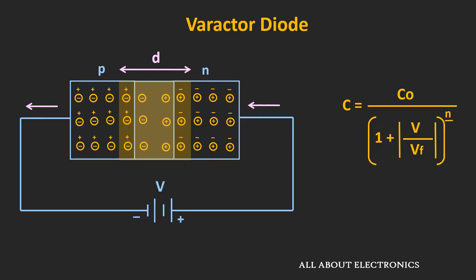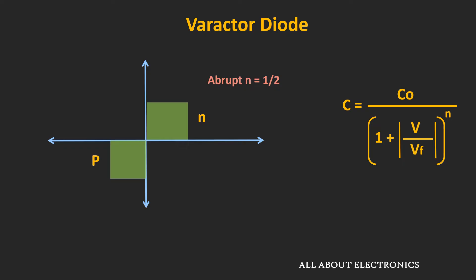The first type is the abrupt varactor diode. In its doping profile, the doping concentration in the P-type and N-type regions is uniform, but at the junction there is an abrupt change in the doping profile. For this type of junction, the value of N is equal to 1/2. Normal P-N junction diodes typically have this abrupt junction.